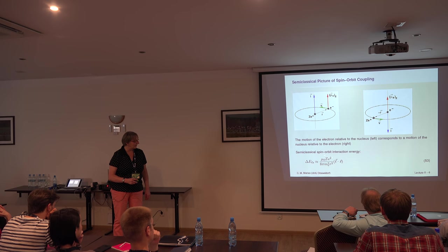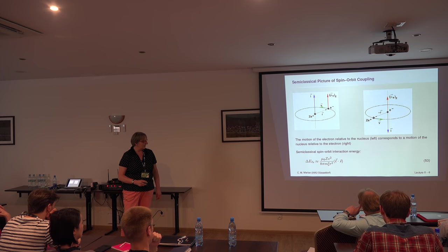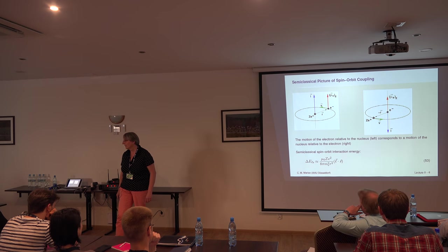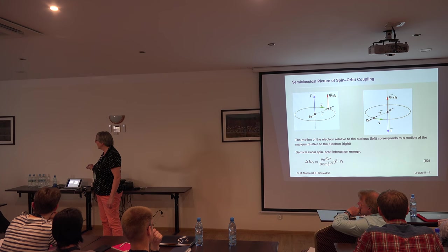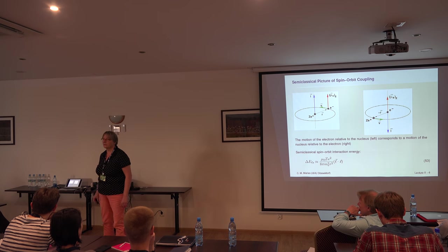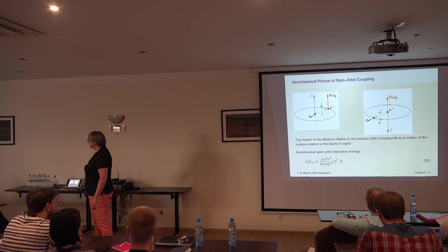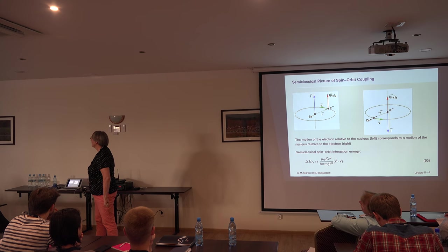This interaction has some pre-factors, and you see that it depends on the charge of the nucleus and on the inverse third power of your distance between the electron and the nucleus. Then you have the angular momentum multiplied by the scalar product with the spin momentum. This 1/R³ dependence makes spin-orbit coupling a very local property — you get the largest spin-orbit coupling when the electron is close to the nucleus.